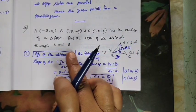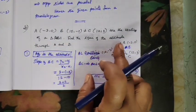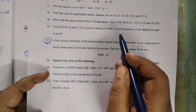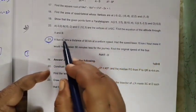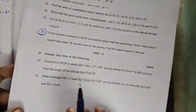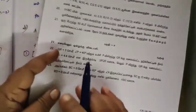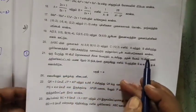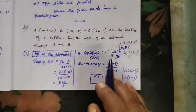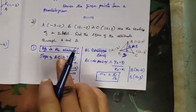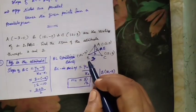This is the triangle ABC. Find the equation of the altitude. So question number 20. There is a triangle. We are going to A and B. Question number 20.